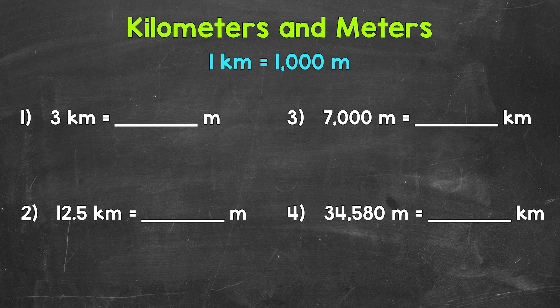Each kilometer is 1,000 meters. So we have 1,000 meters, 1,000 meters, and then 1,000 meters. In other words, 3 times 1,000. That gives us 3,000. So 3 kilometers equals 3,000 meters.